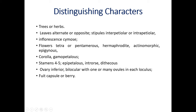Diagnostic characters of the family: plants are herbs, trees, or shrubs — habit. Leaves alternate or opposite — types of phyllotaxy. Stipules interpetiolar or intrapetiolar. Inflorescence cymose. Flowers tetra- or pentamerous — number of individuals four or five. Hermaphrodite — bisexual. Actinomorphic, epigynous. Corolla gamopetalous — petals fused, 4 to 5. Stamens epipetalous — attached to petals — introrse, dithecous — two cells. Ovary inferior, bilocular, with one or many ovules in each locule. Fruit is capsule or berry.